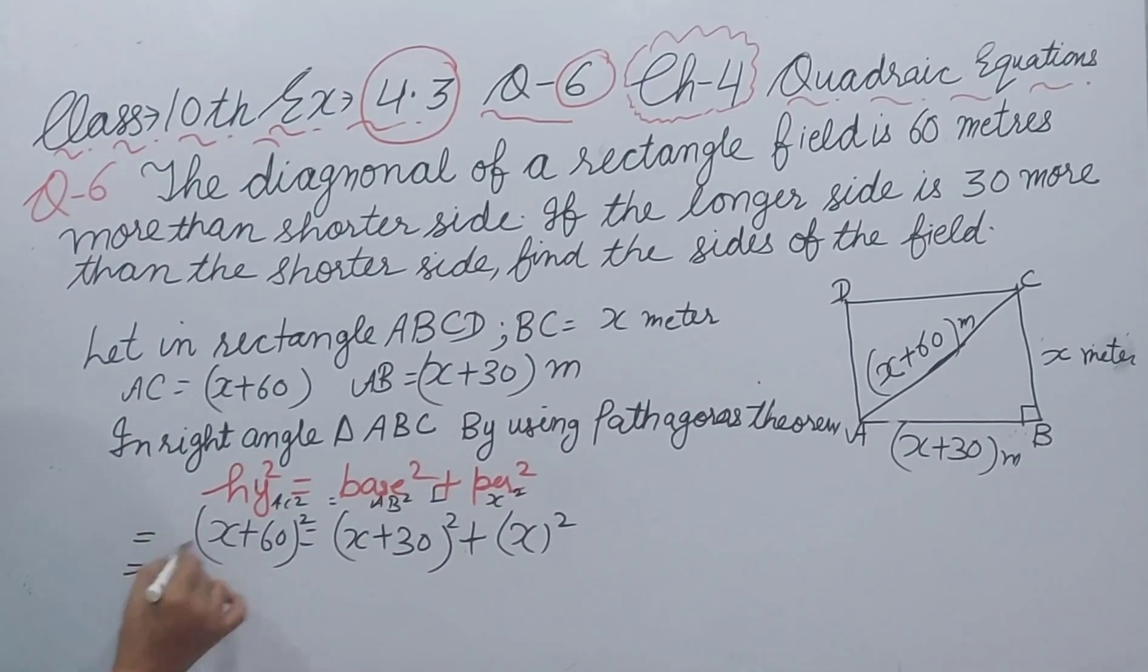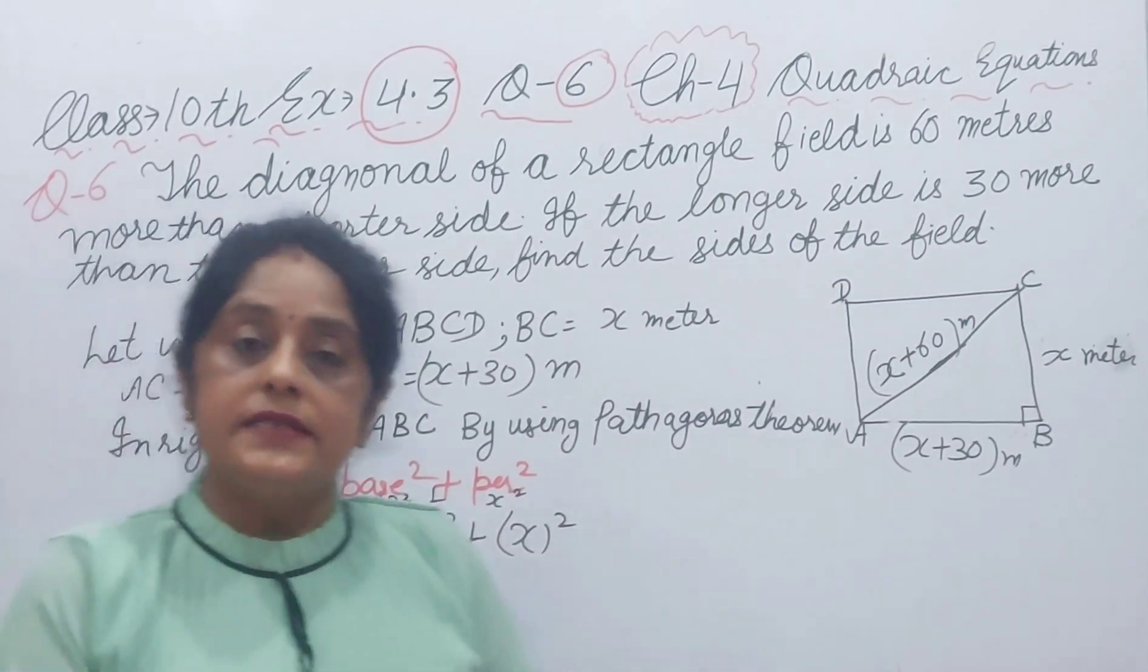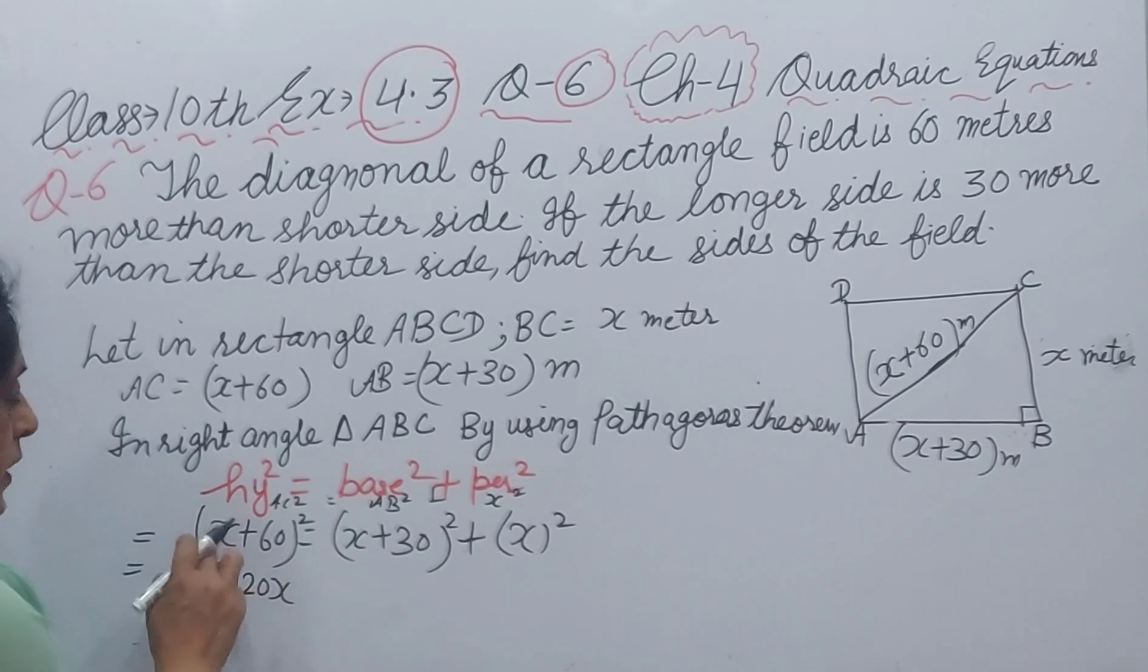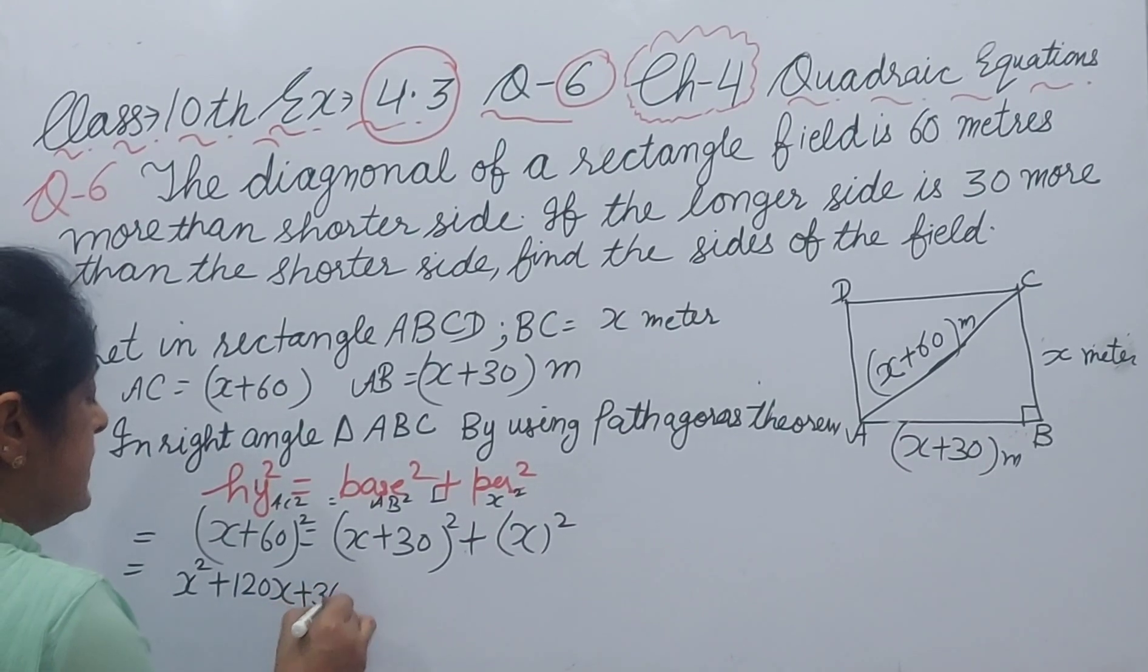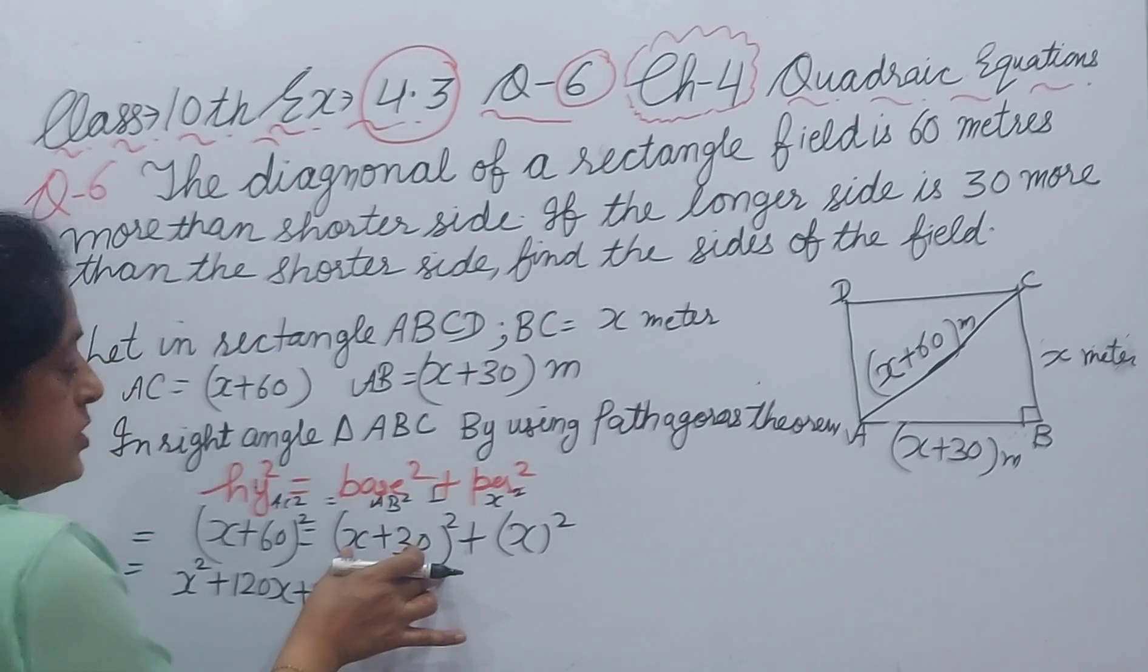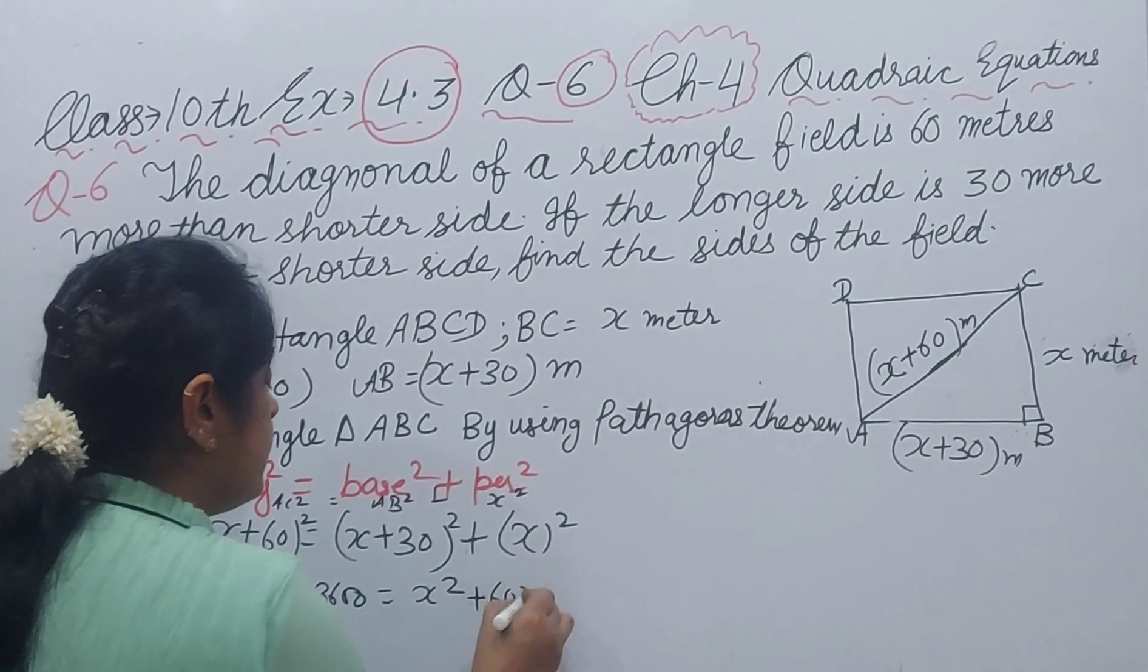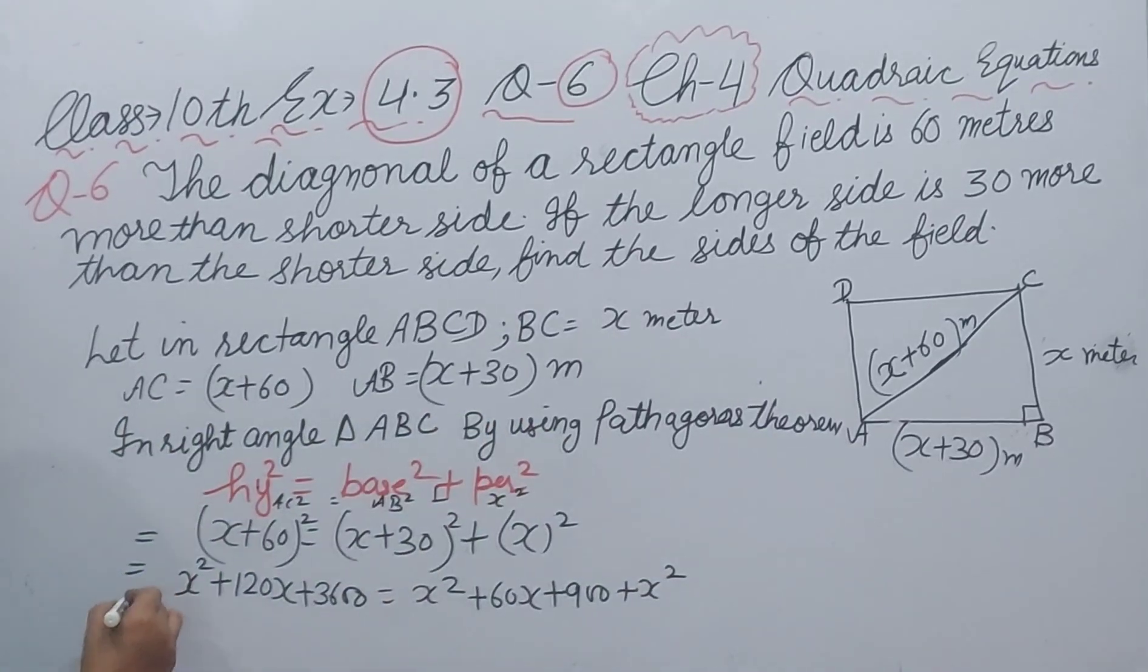Now, we will use A plus B whole square: A square plus B square plus 2AB. It will be X square, 120X, 2AB, 2 multiply X into 60, 120X, and 3600, 60 square is 3600. Now, we expand this by using formula A plus B whole square. It will be X square, 2AB, 2 into 30 into X will be 60X, plus 900, and plus X square.